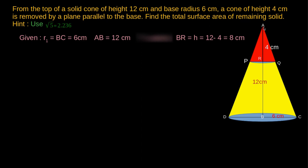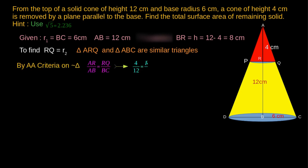consider the triangle ARQ and the triangle ABC formed by joining the vertex and center of the base and slant height of the cone. Here, angle B equals 90 degrees, angle Q equals angle C because RQ is parallel to BC. Therefore, the two triangles are similar triangles according to AA criteria.